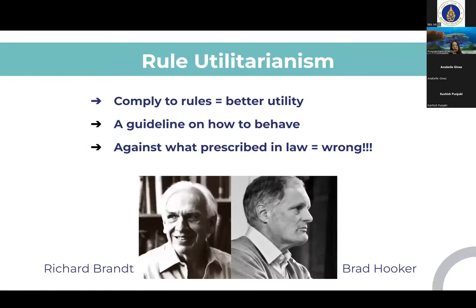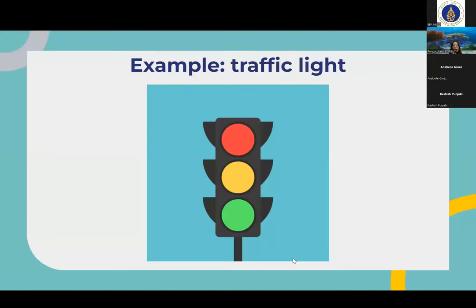Next is rule utilitarianism, a moral theory outlined by Richard Brandt and Brad Hooker. The concept is that there are moral codes that act as a guideline on how to behave in a given situation. For example, a traffic light tells the driver what to do — whether to go through, to drive slower and prepare to stop, or stop and wait for the light to turn green again. If the driver continues driving during a red light, his action is considered wrong. The reason is that one's action alone cannot evaluate the appropriateness or correctness of things under ongoing circumstances, so rules and regulations take place to specify exactly what needs to be done. However, it should be noted that sometimes rules can contradict people's common sense as well.